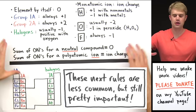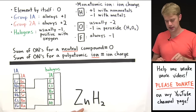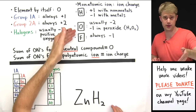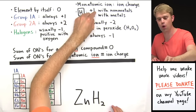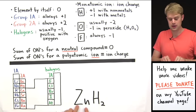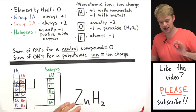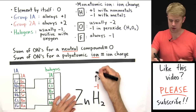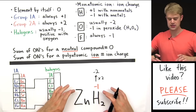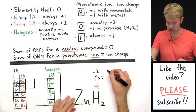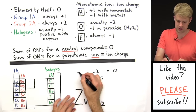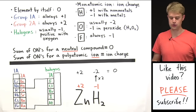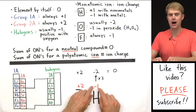Now for some more challenging examples. ZnH2. Zinc — we don't know what its charge will be. Hydrogen has a rule: we've been used to hydrogen being plus one because it's been with nonmetals, but here it's with a metal — with zinc. So hydrogen's oxidation number is going to be minus one. We have two hydrogens, so minus one times two gives us minus two. Since this is a neutral compound, zinc plus minus two has to give us zero. So zinc's oxidation number must be plus two.